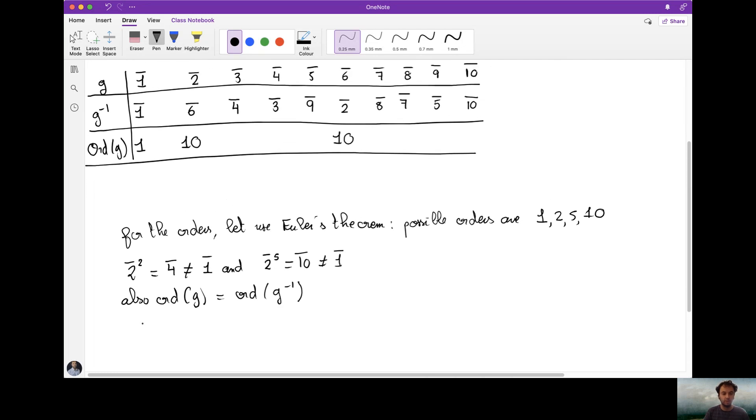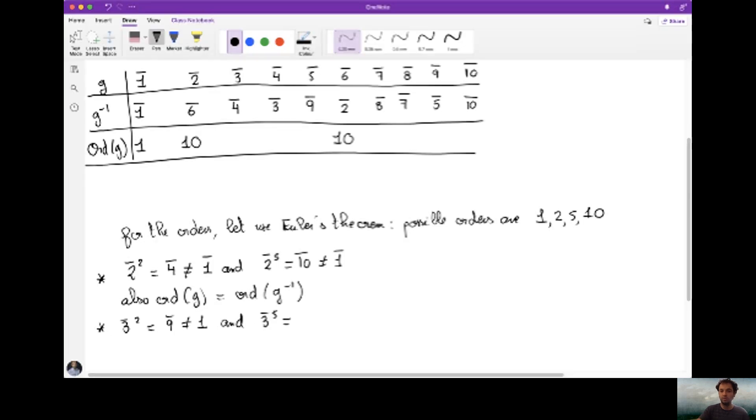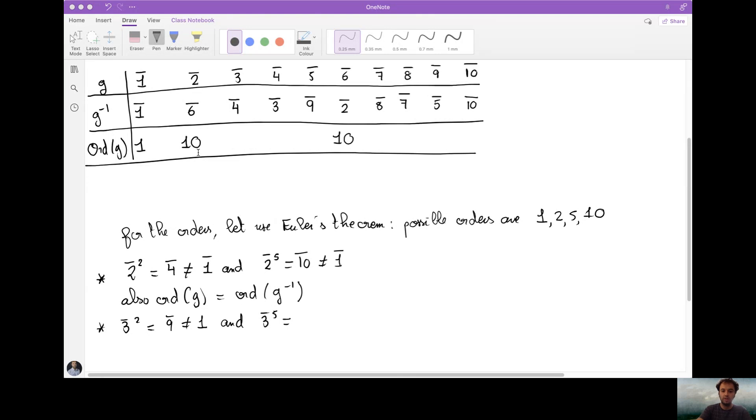Let's continue. Now let's do the same for 3. So 3 to the square is 9. 9 is not 1. And 3 to the power 5, use your favorite way of computing these things, and you will find that 3 to the power 5 is equal to 1. So the order of 3 is 5, or the order of 4 is 5 as well.